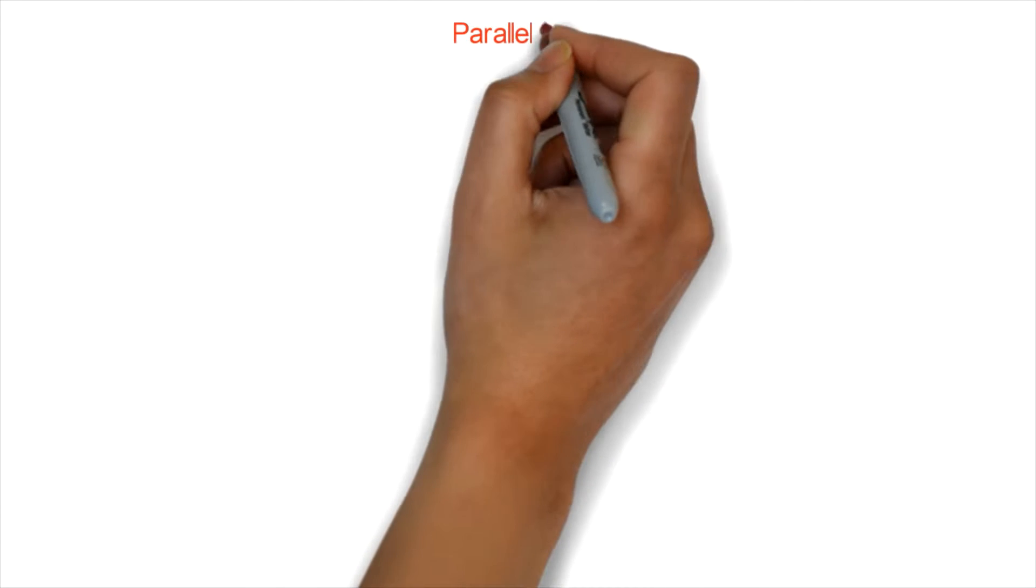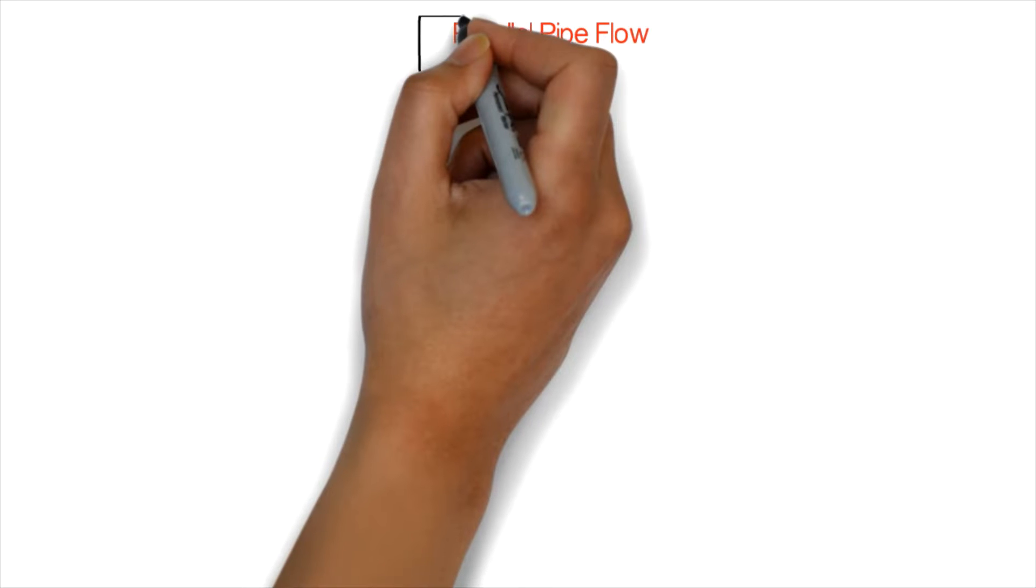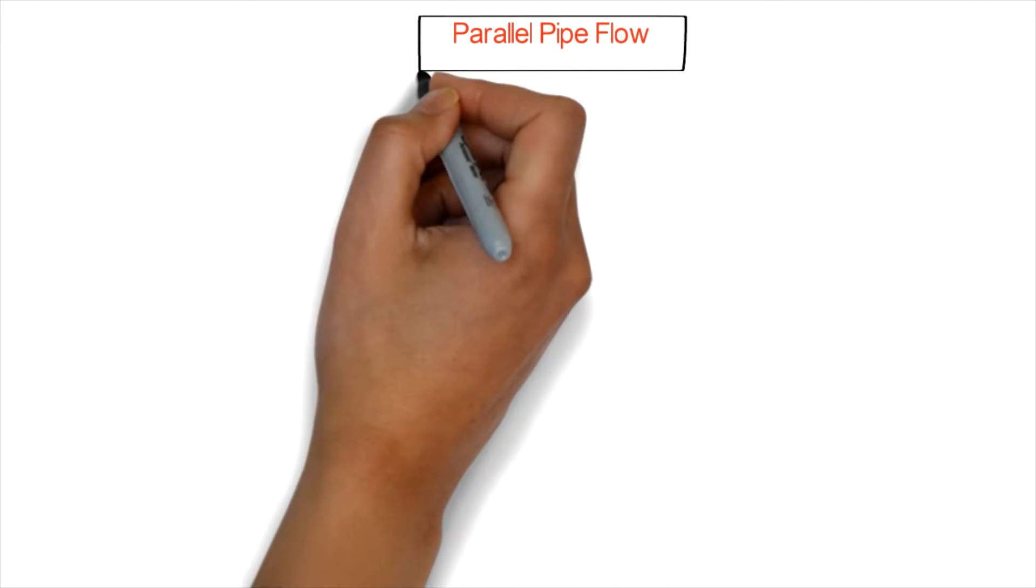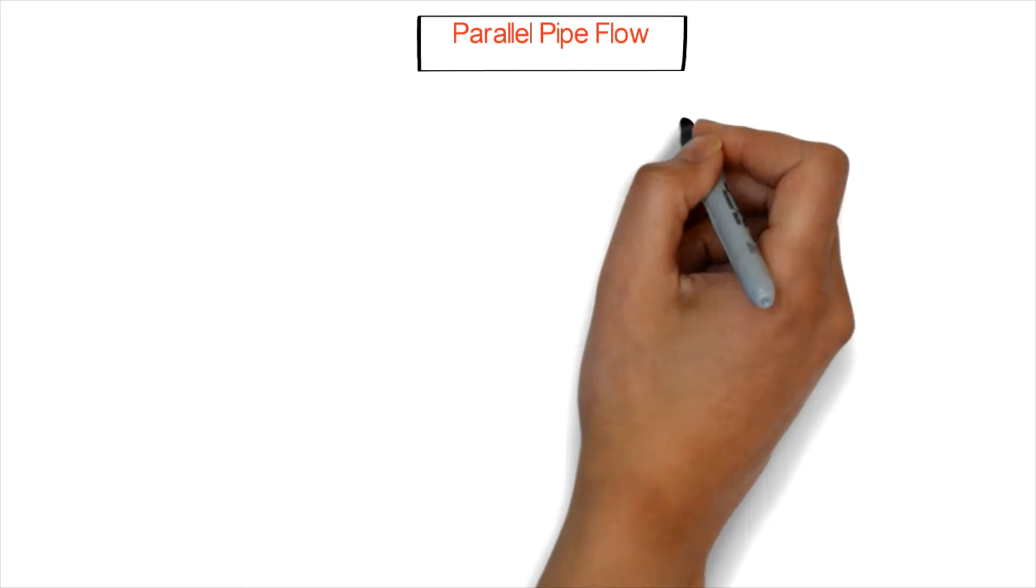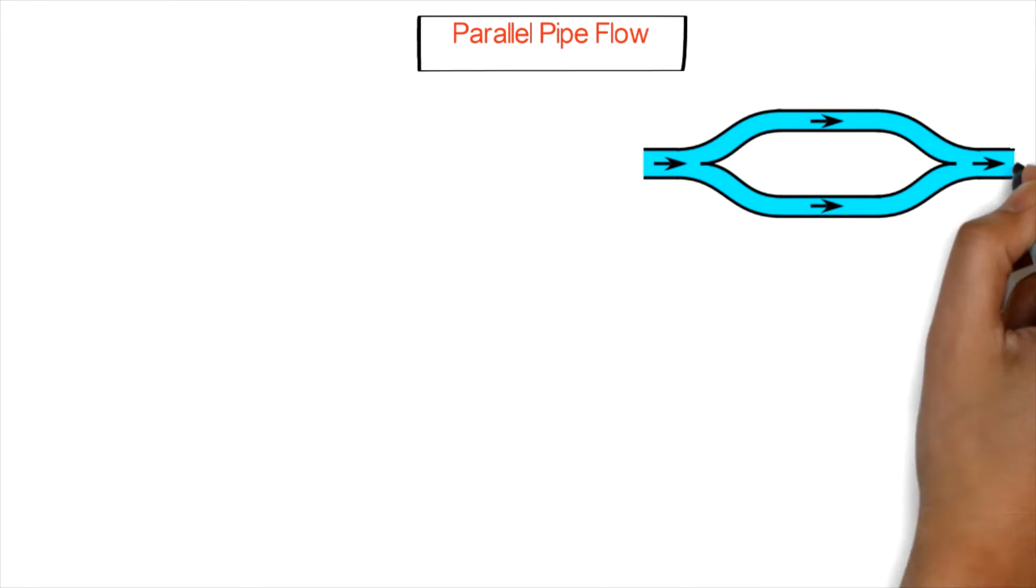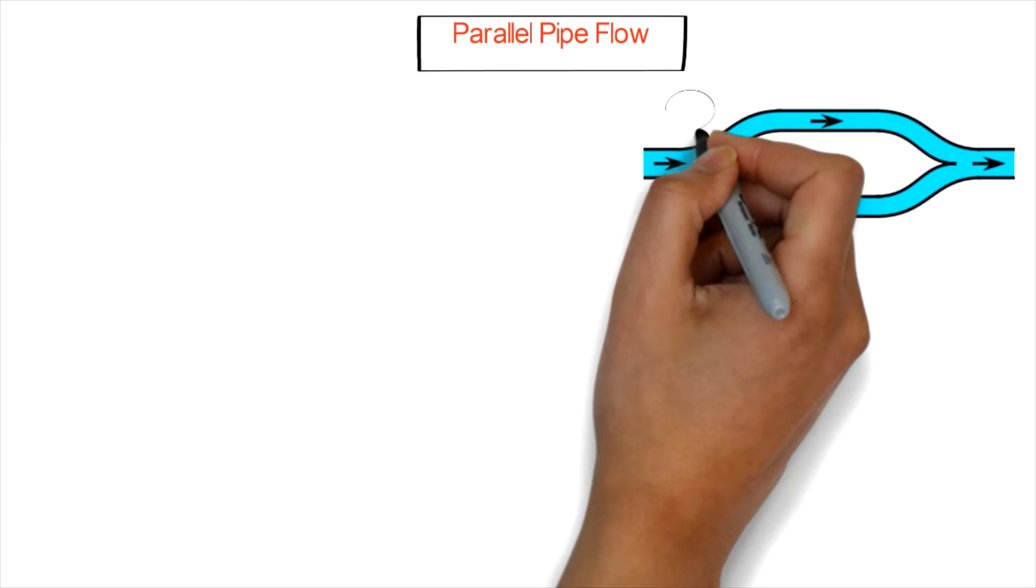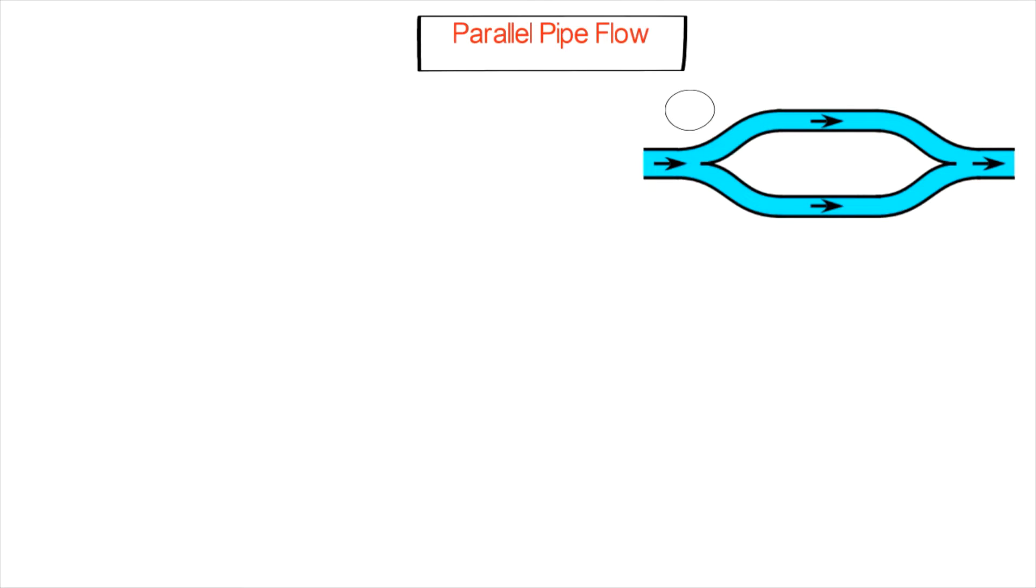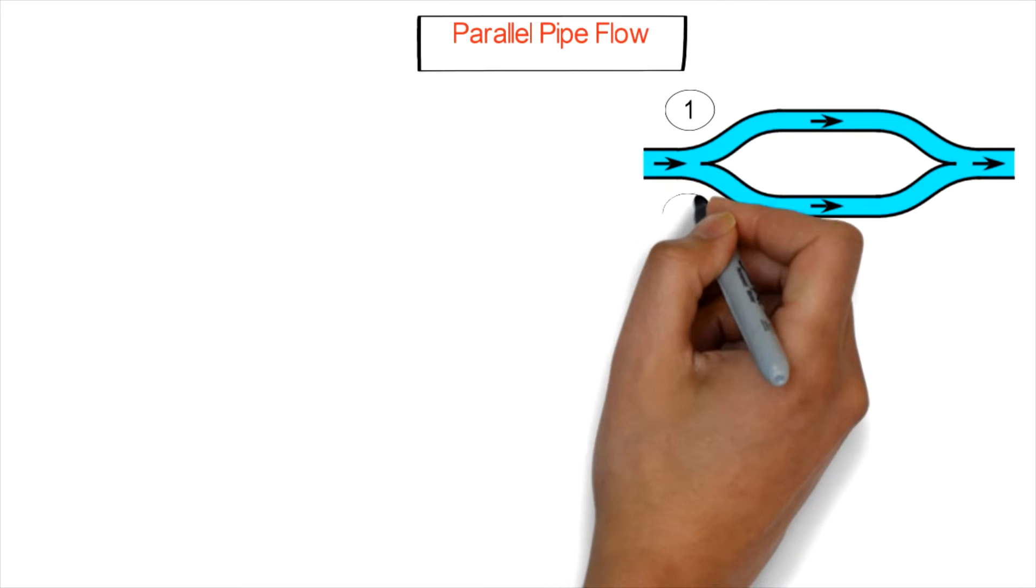Hello and welcome to Engineering Key tutorials. In this video I will solve a fluid mechanics problem about parallel pipe flow. As you can see here, we have two pipes parallel to each other with an outlet flow.